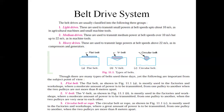Flat belts are mostly used in factories and workshops where a moderate amount of power is to be transmitted, and the distance between the two pulleys is not more than 8 meters apart. V-belts are mostly used for industrial purposes where a moderate amount of power is transmitted between two pulleys. Circular or rope pulleys are used where power is transmitted between two pulleys whose distance is more than 8 meters apart.